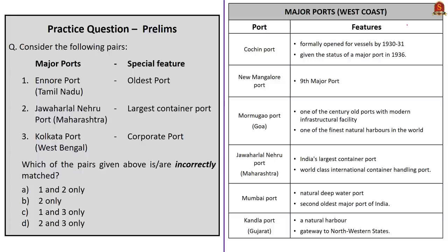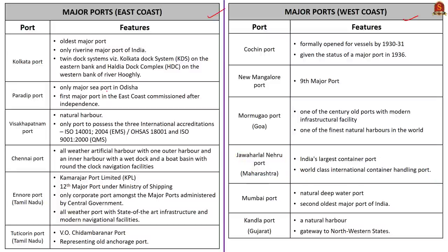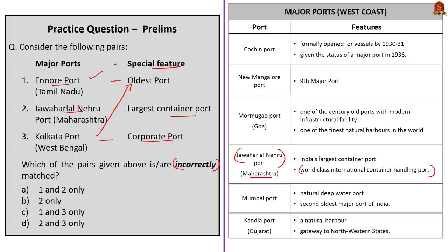The question gives three pairs: Ennur Port as oldest port, Jawaharlal Nehru Port as largest container port, and Kolkata Port as corporate port. You need to identify incorrectly matched pairs. Kolkata Port is actually the oldest major port. Jawaharlal Nehru Port Trust in Maharashtra is the largest container port with world-class international container handling facilities. Ennur Port, the satellite port of Chennai also known as Kamarajar Port Limited, is the only corporate port among major ports. So pairs one and three are incorrectly matched. The correct answer is option C — one and three only.